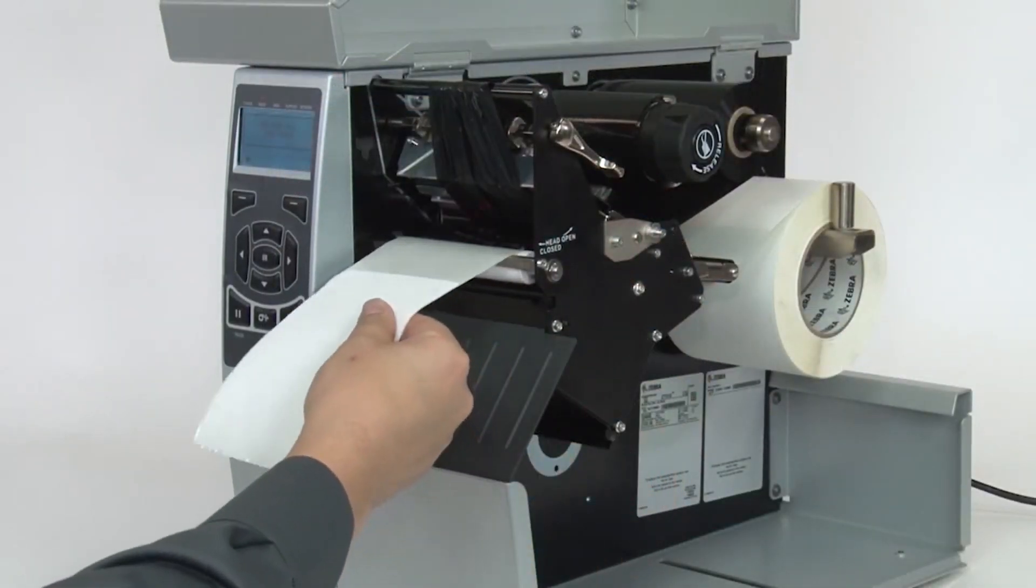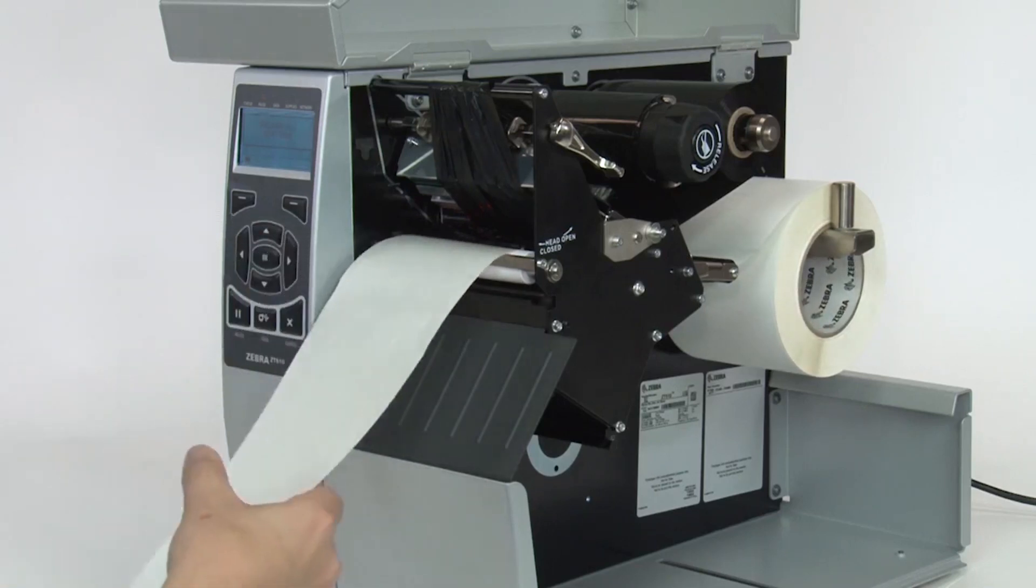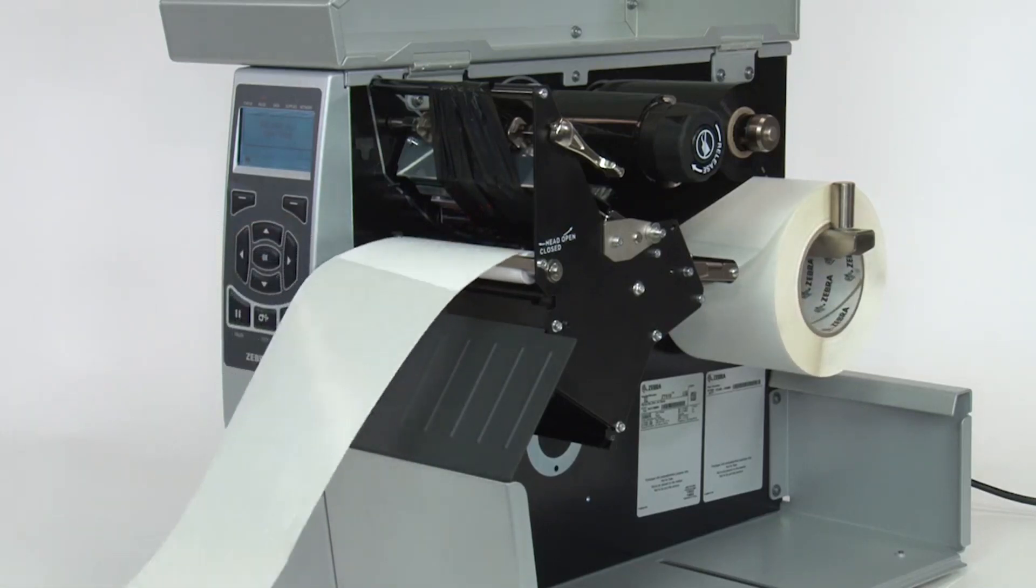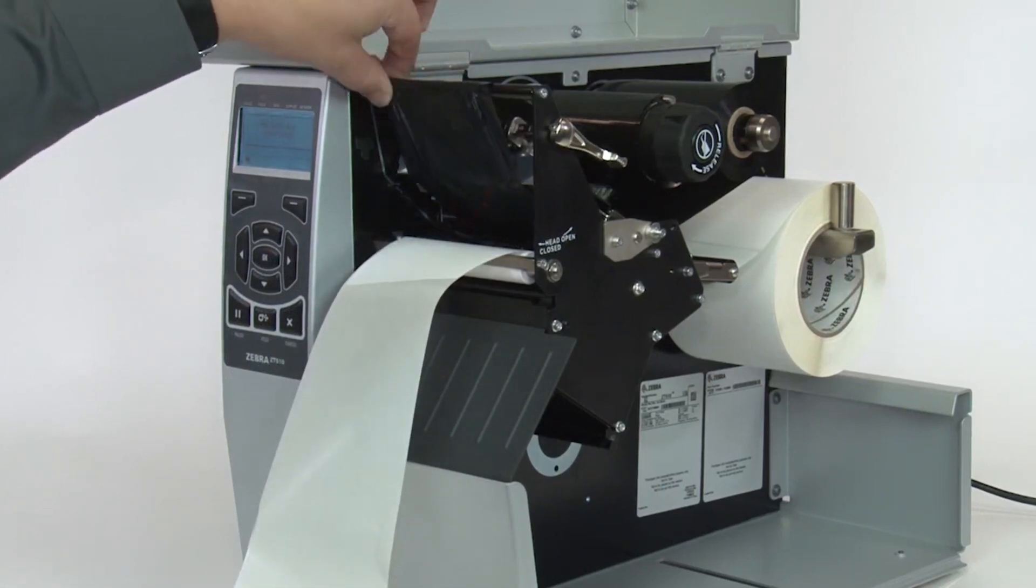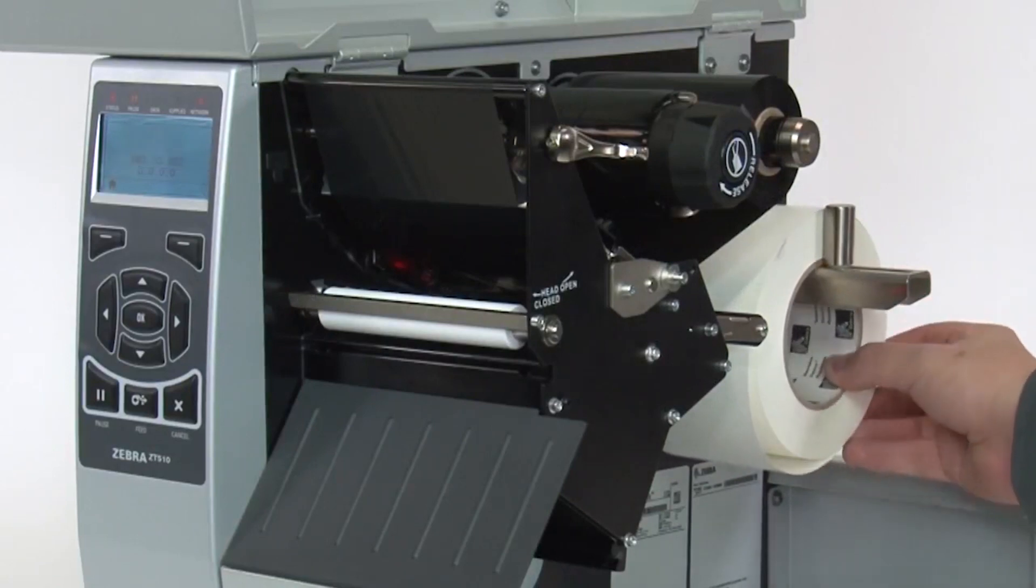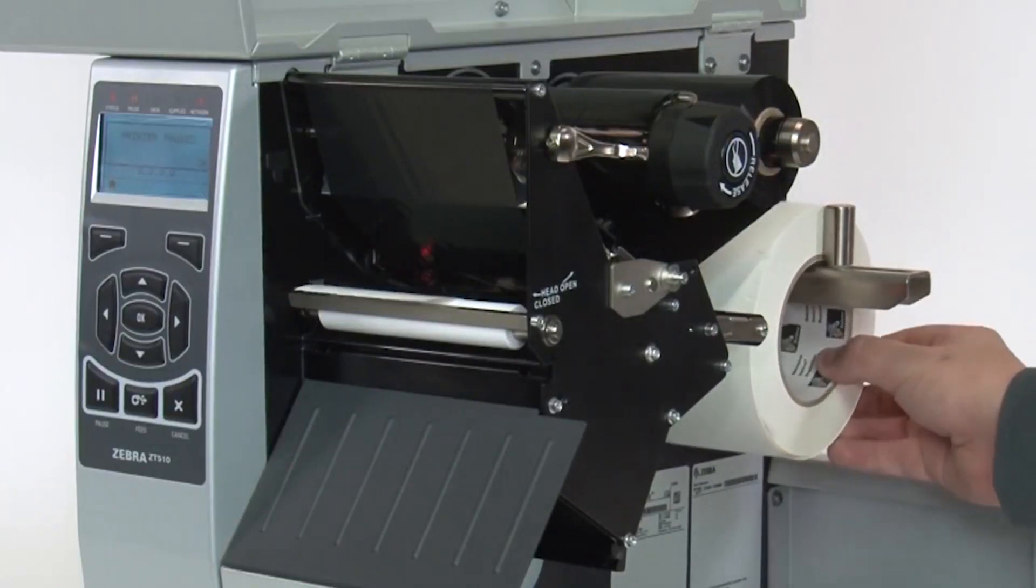Be sure that the ribbon is located under the ribbon sensor. If your media has a gap, hole, or notch, please be sure that the media and not the gap, hole, or notch is under the media sensors. If your media has a black mark, the black mark position does not matter.